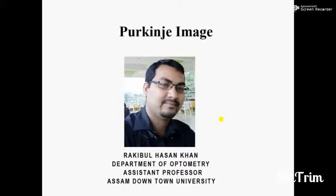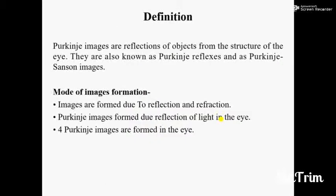The definition of Purkinje Images is: Purkinje Images are reflections of subjects from the structure of the eye. They are also known as Purkinje Reflexes and as Purkinje Sanson Images. Images are formed due to reflection of light in the eye.